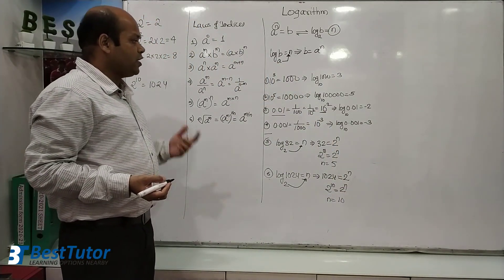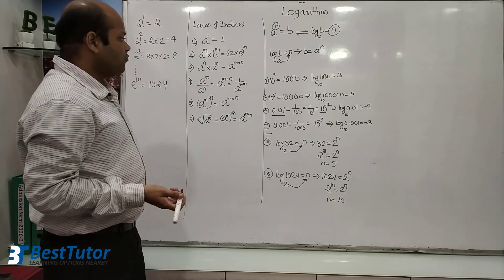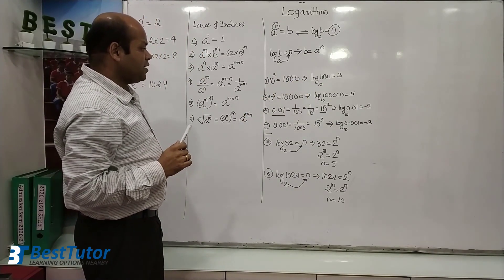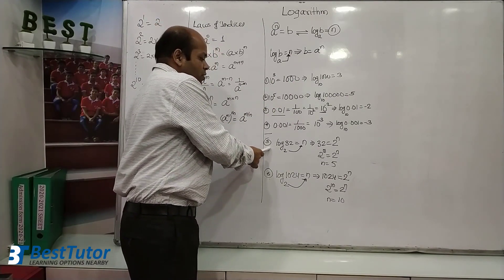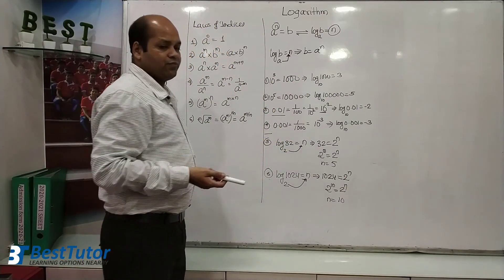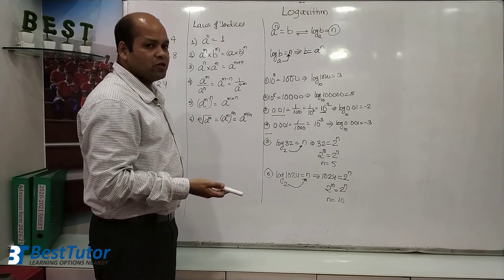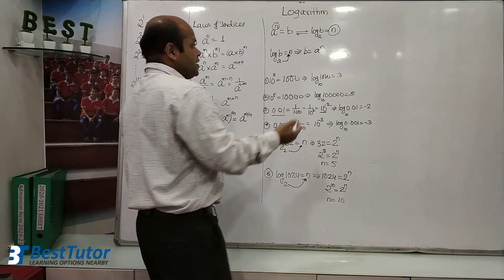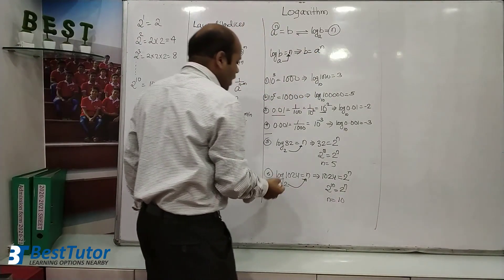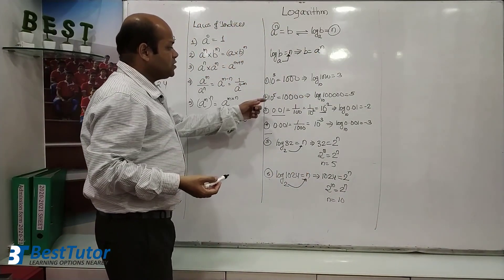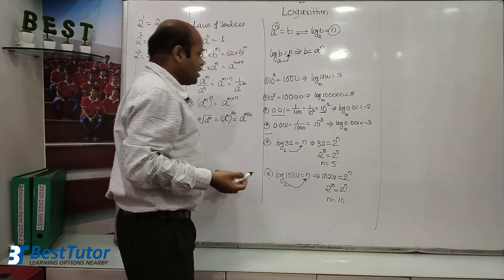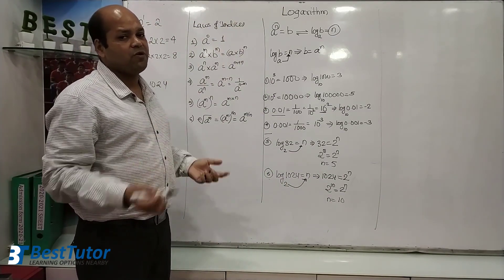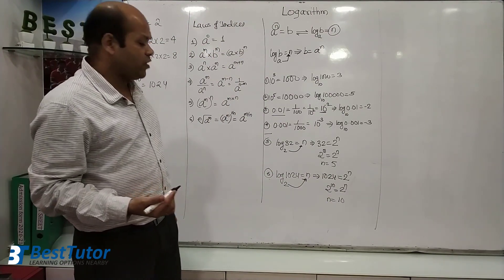That is the second type of question — I have a value in logarithm form, convert to exponential, and find n. The third type of question involves finding the value of a or the value of b. You can also have a question where you need to simplify an expression. Let me take an example for finding the value of a and finding the value of b.